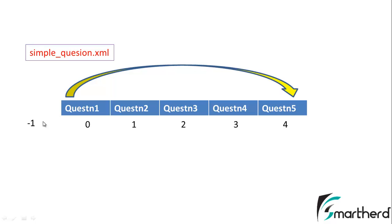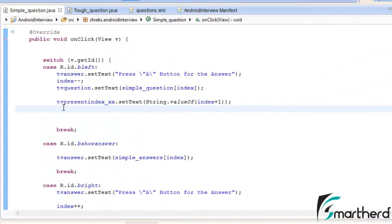The solution is to change the index of minus 1 straight to 4 — the last position — so the last question appears for the user. Similarly, if the current index is 4 and the user presses the right button, index becomes 5, and at position 5 there is no question, so the program crashes again. In that case we change index 5 straight to 0. This makes our array circular in nature, allowing the user to freely press left or right to switch questions without crashing.